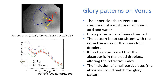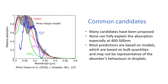Many candidates for the absorber have been proposed over the years. This diagram here shows just a few of them, but none of them can fully explain the absorption — especially not at this part here from 400 to 500 nanometers. As you can see, none of them quite match this curve.